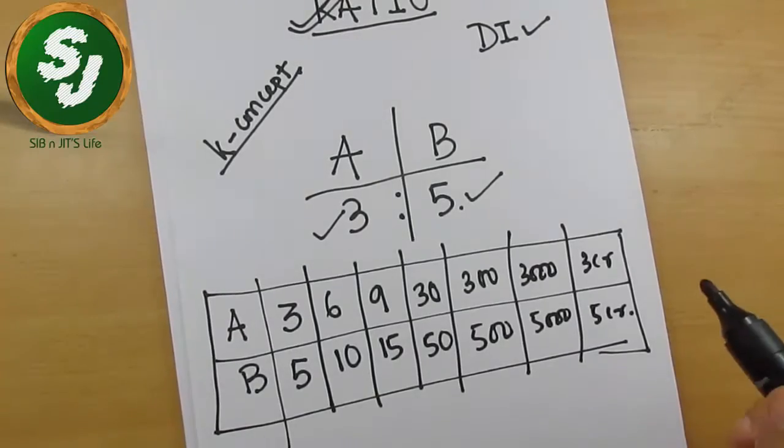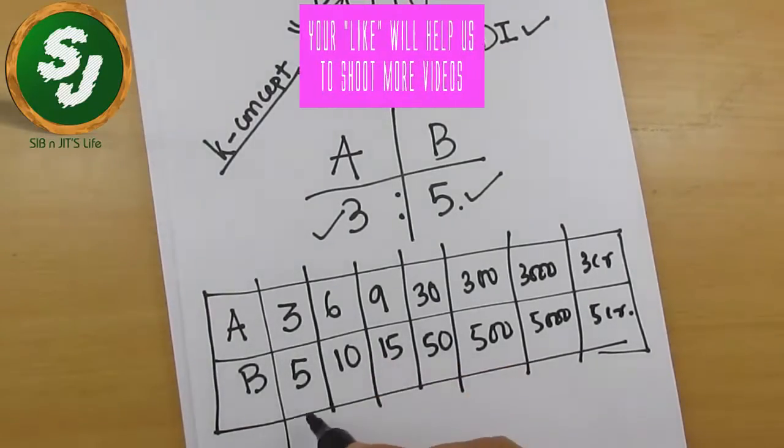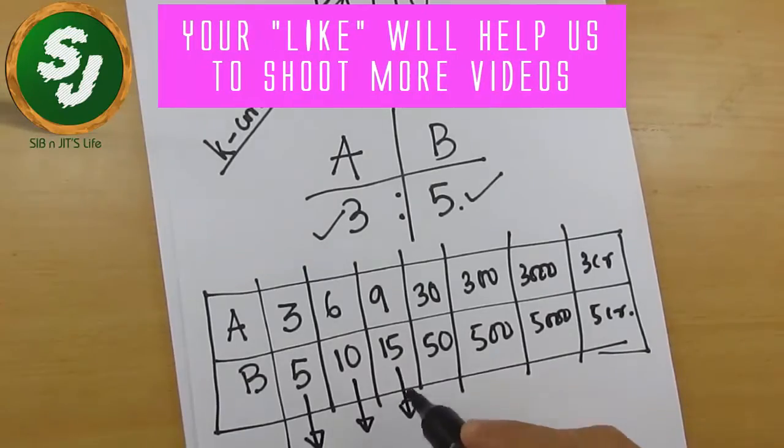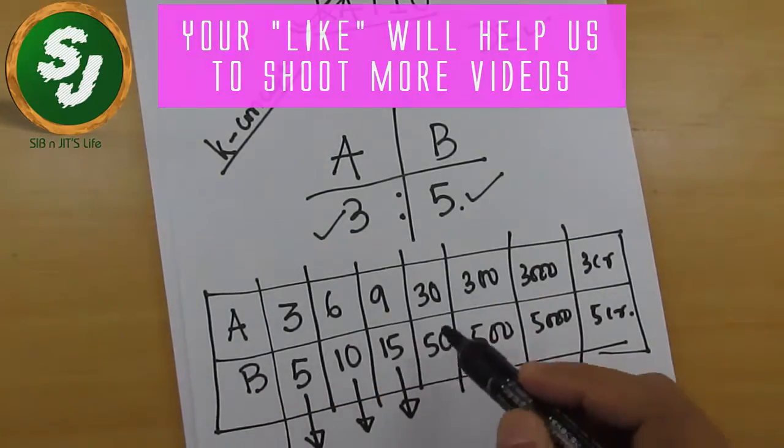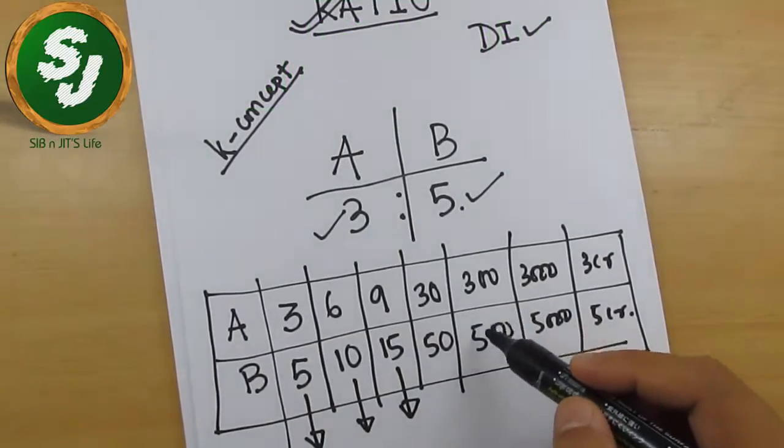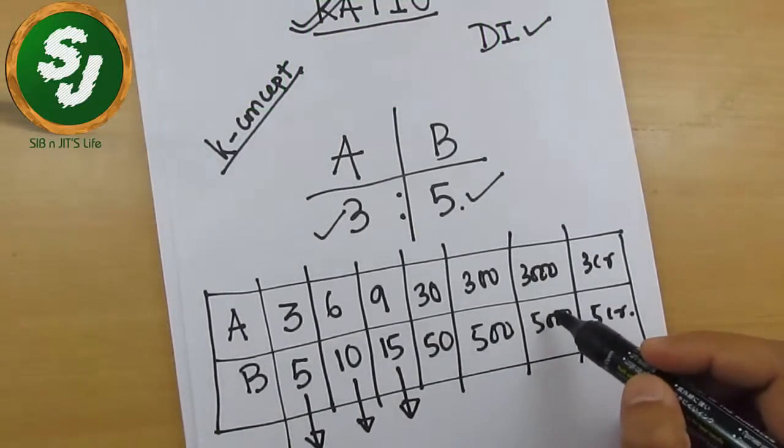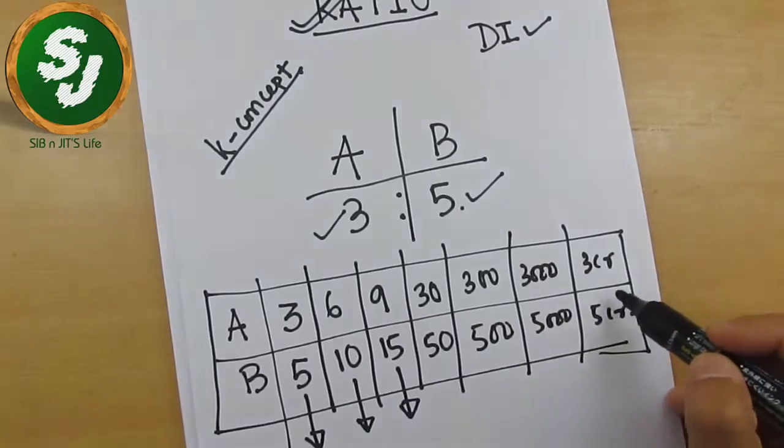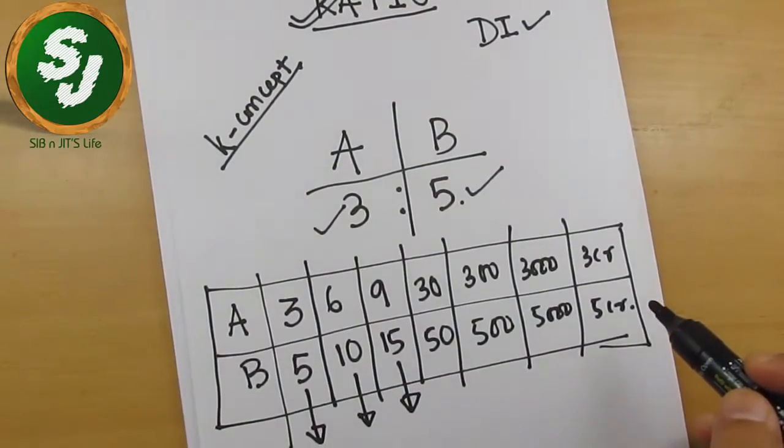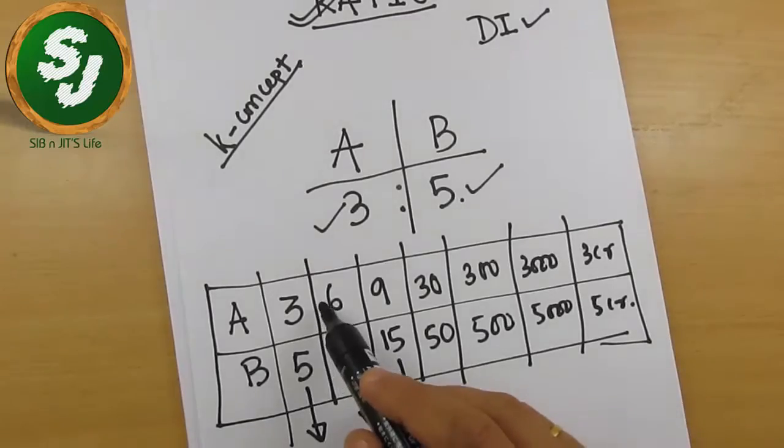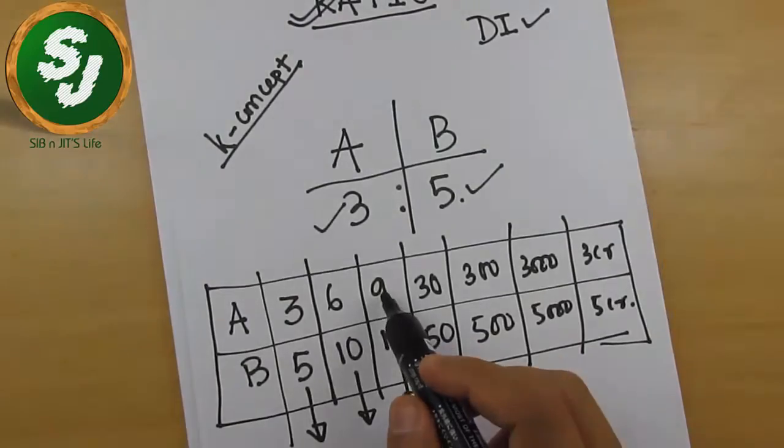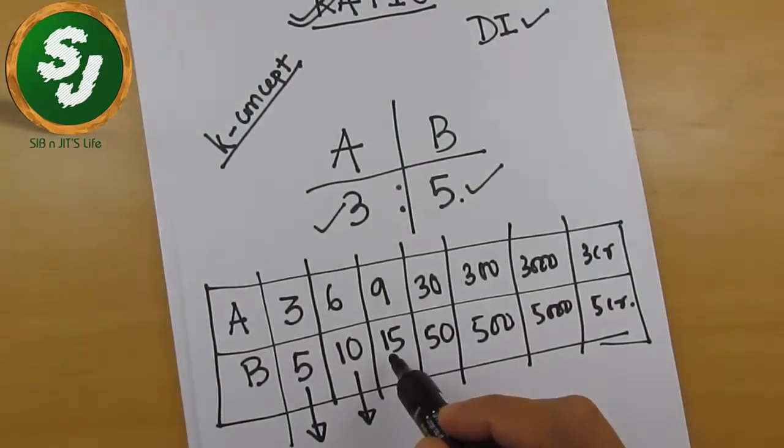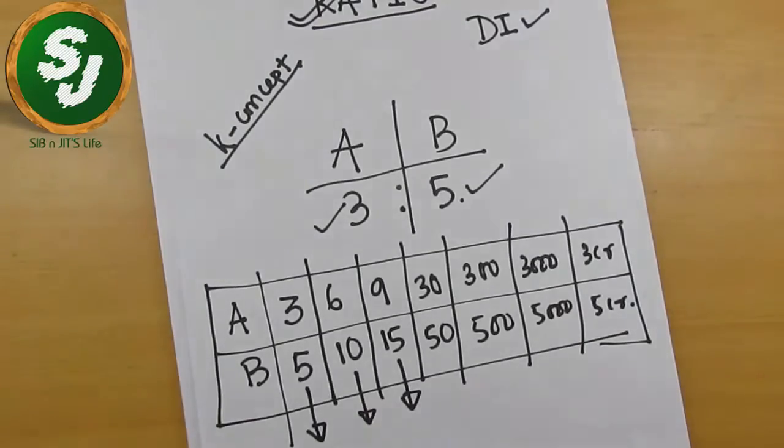So the logic behind is, in all the cases, if you look into all the cases here, the ratio of A and B is 3 is to 5. In every case, it's 3 is to 5. Here 300, 500, ratio is 3 to 5. 35,000, the ratio is 3 to 5. 3 crores, 5 crores, the ratio is also 5. The point is here, every set of options that I am writing here is a multiple of 3 in case of A and a multiple of 5 in case of B.